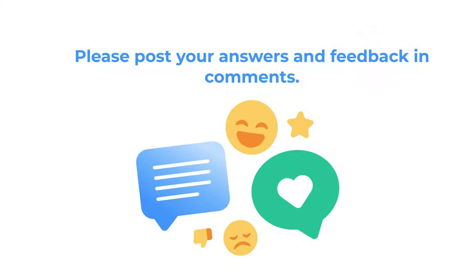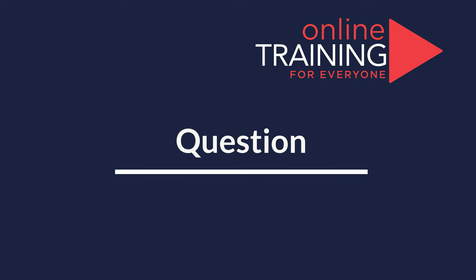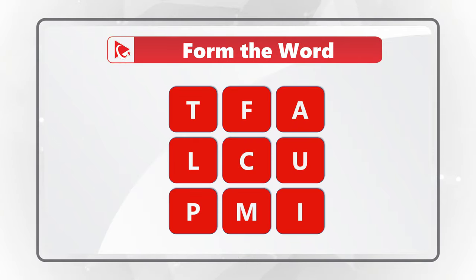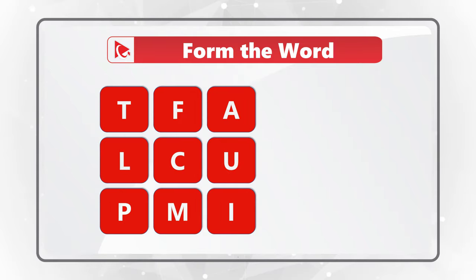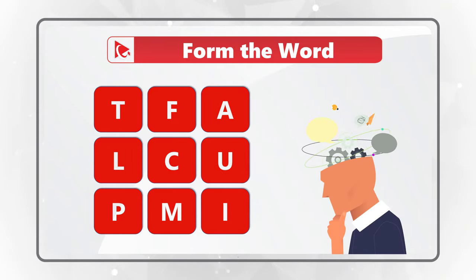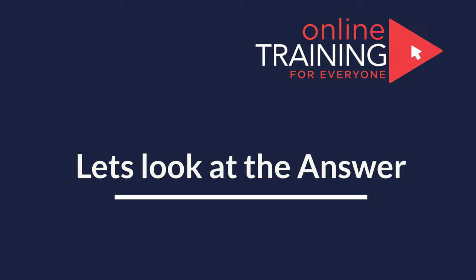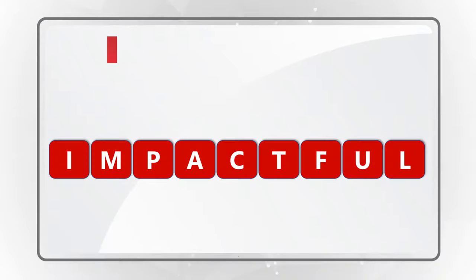This question truly tests your knowledge of the English dictionary. You need to form a word using all the letters only once. There are nine letters: T, F, A, L, C, U, P, M, I. It's a very complex nine-letter word — consider pausing the video to get to the correct answer.